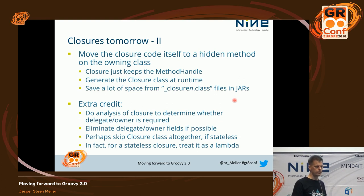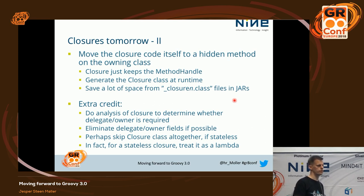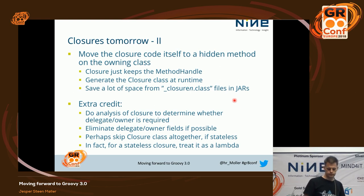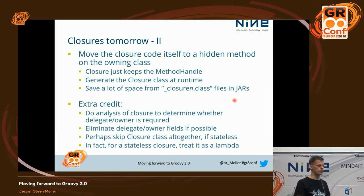There are certain extra things we could do: see if we can dehydrate the closure class a little. If the code doesn't need a delegate, or doesn't need the owner, we might be able to save those fields — just have the method handle pointing back to the implementing method on the owner. For stateless Lambdas in Java, they just create one object, not one every time it's used, and we could do that as well. Those are like extra credits — avoiding all those interim objects and dynamic calls would be a great win.